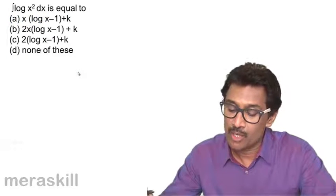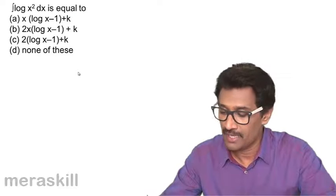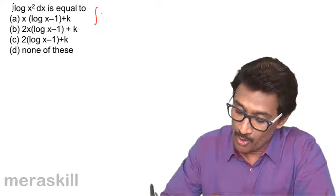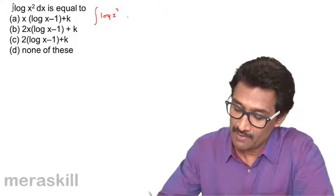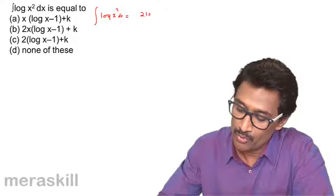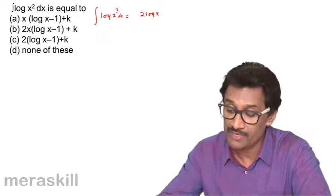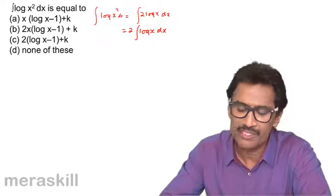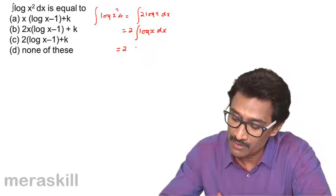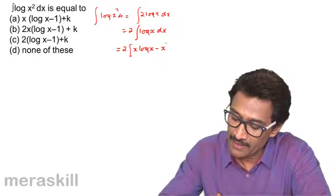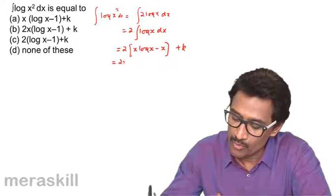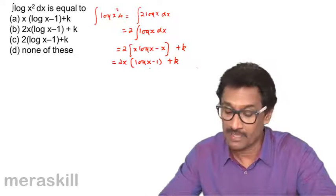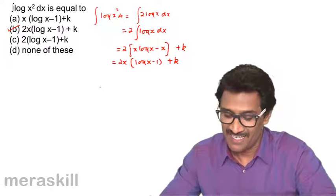The last problem is ∫log(x²) dx. Note this is not (log x)², but log(x²) = 2·log x. So the integral becomes 2·∫log x dx = 2·(x·log x - x) + k = 2x·(log x - 1) + k, which is option B.